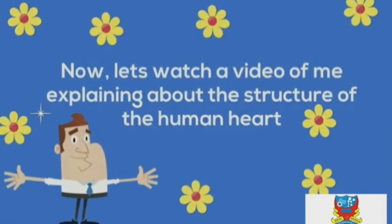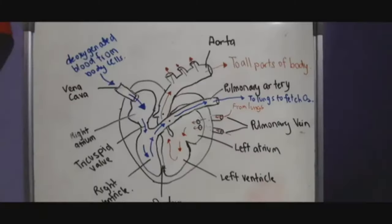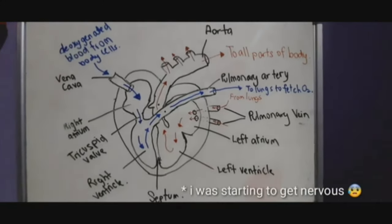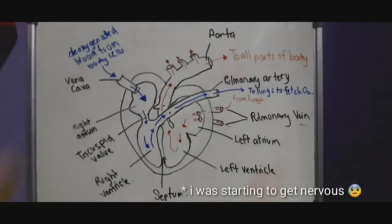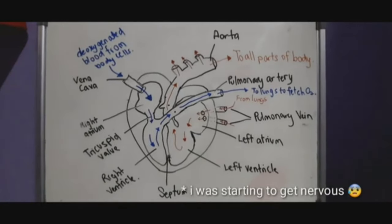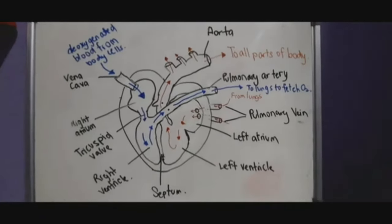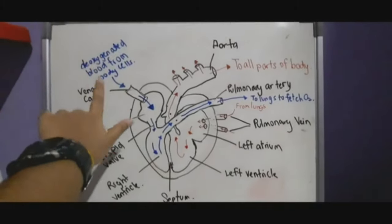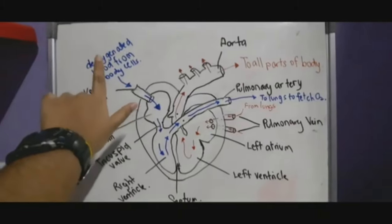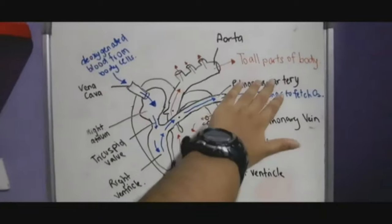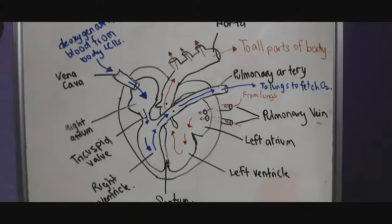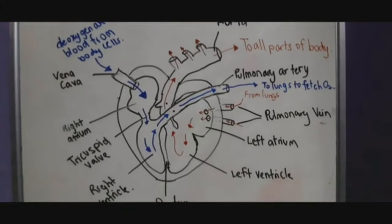Let's watch a video explaining the structure of the human heart. In the diagram, blue represents deoxygenated blood and red represents oxygenated blood. Let's follow the blood flow as a story.